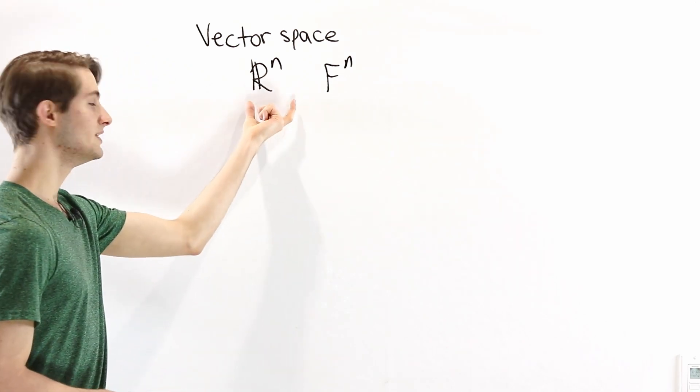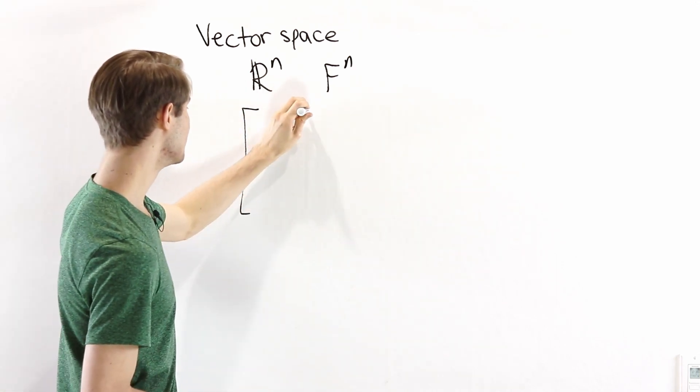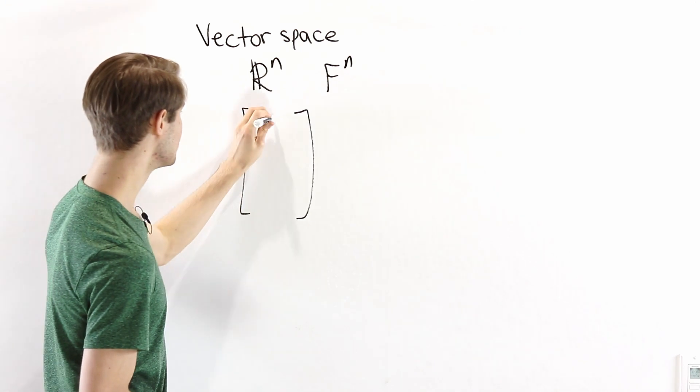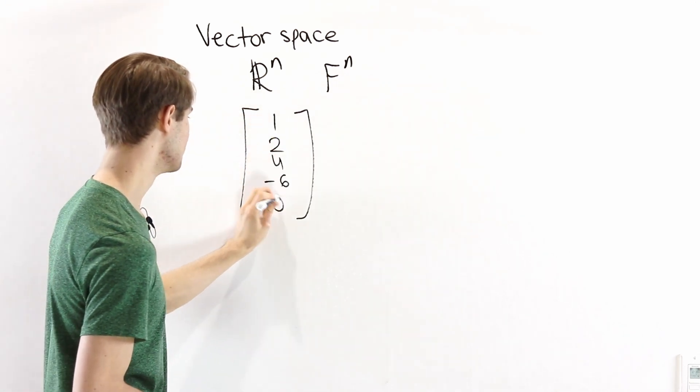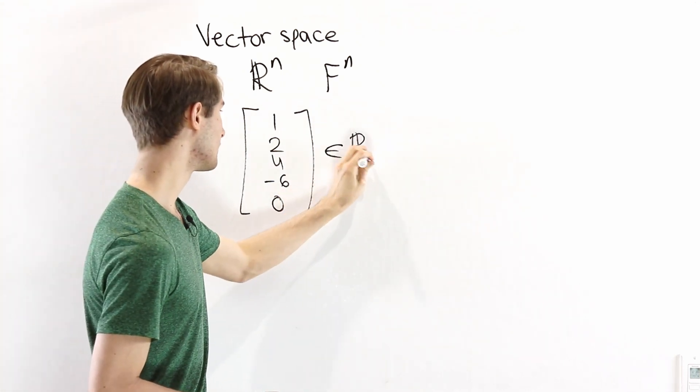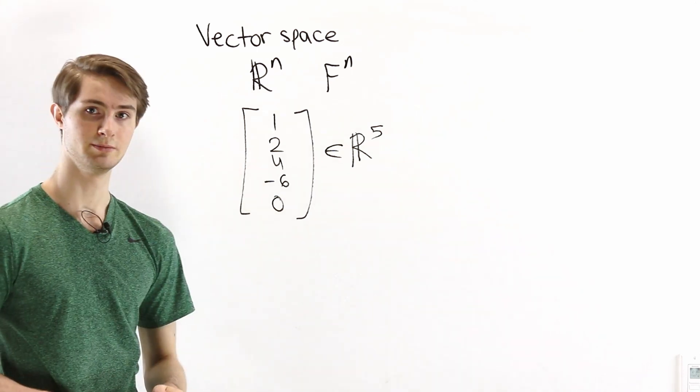The idea here is that the elements in a vector space are giving us a list of n real numbers. So we could have a vector that looks like 1, 2, 4, negative 6, 0. This would be a vector that's an element of R^5 because it has five different real numbers.